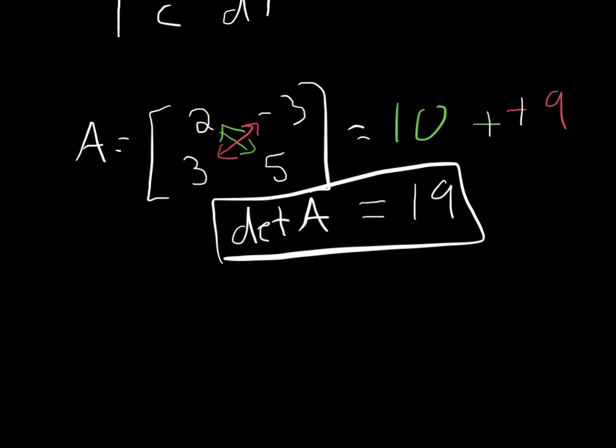Okay, that's not too difficult for a 2 by 2 matrix. Now, to find the inverse of a matrix, we're going to use that determinant. So find the inverse.